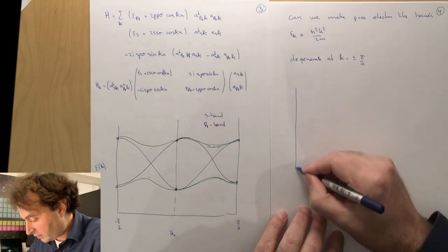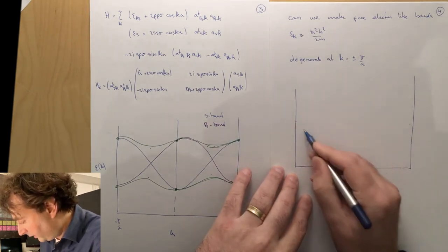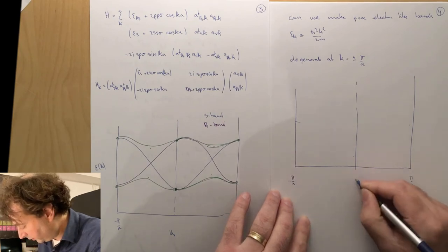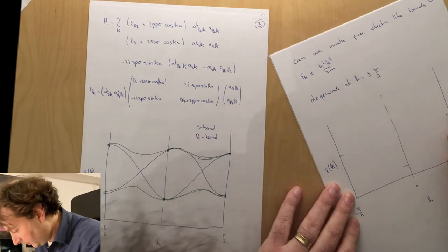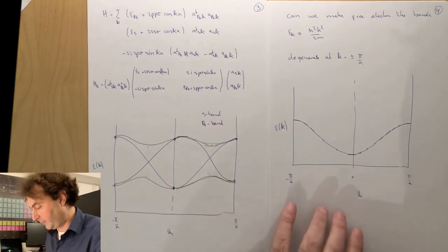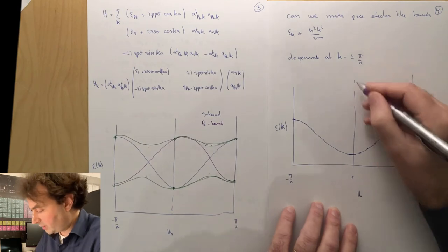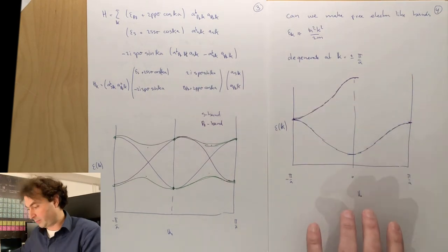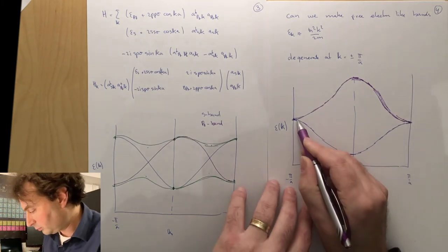I have my tight-binding s band, minus pi over a to pi over a. Then we have a p band and I want it to be degenerate at these points, but of course my dispersion is opposite because pp sigma has the opposite sign from ss sigma.